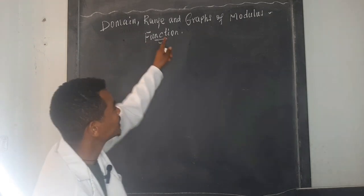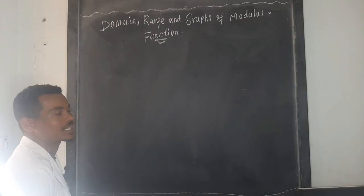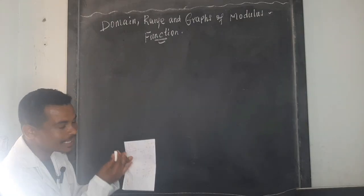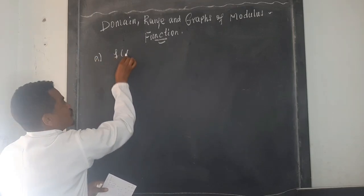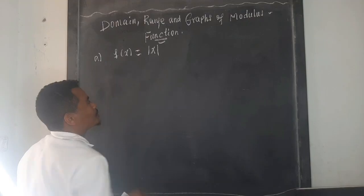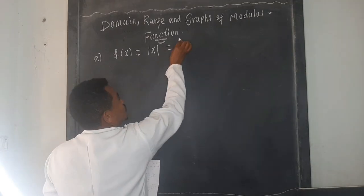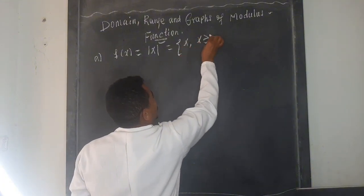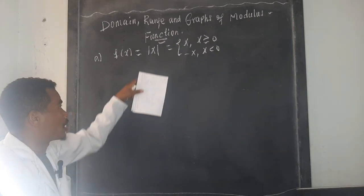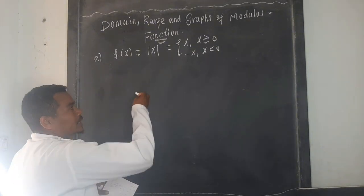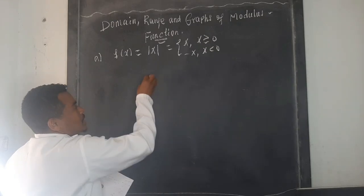Today let's look at the domain, range, and graphs of the modulus or absolute value function. Starting from the simple ones: f(x) = |x|. When you define this, it is x for x greater than or equal to zero, and minus x for x less than zero. The graph of the absolute value function has a V-shape.